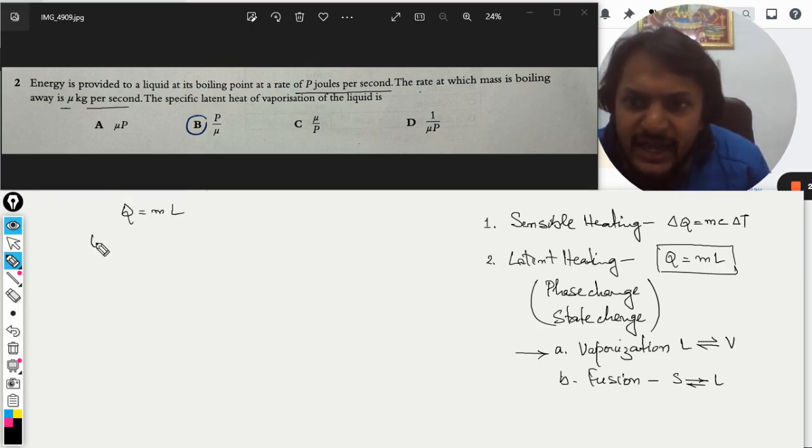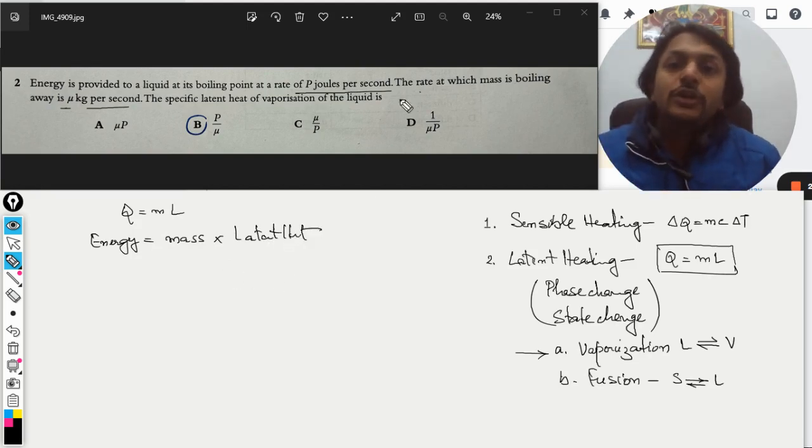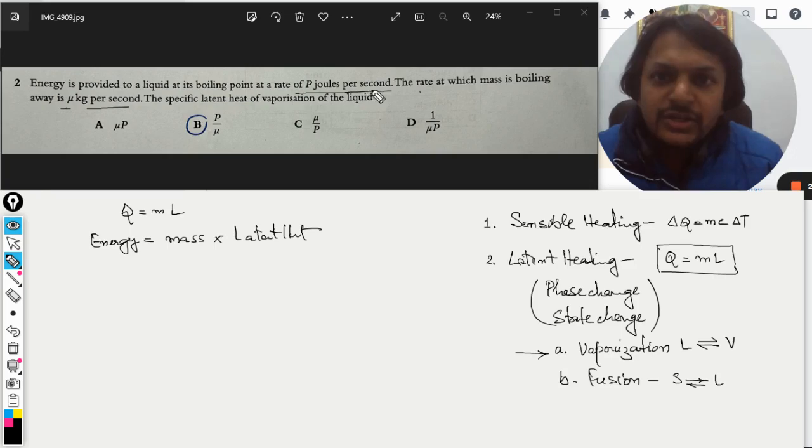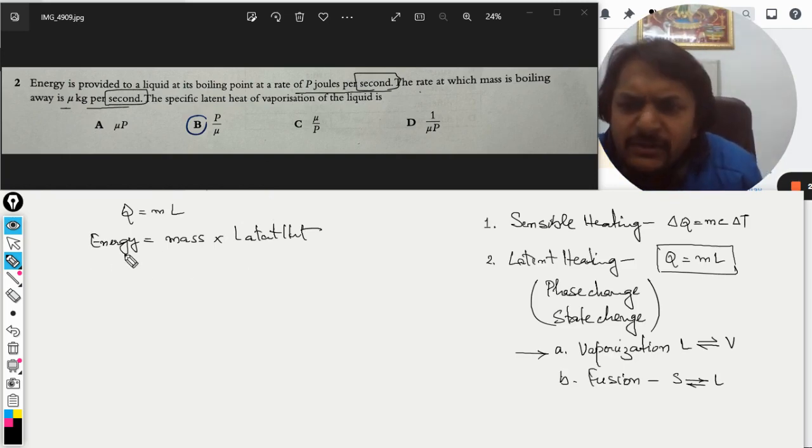Now we are actually talking about the rate, the power. So the energy is divided by time and the mass is also divided by time. So what we can do is divide by time. So it will be energy divided by time and this will be mass divided by time.